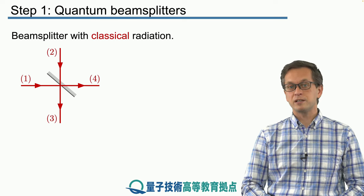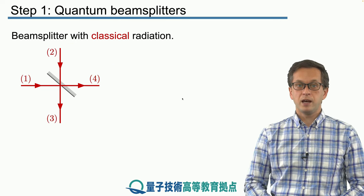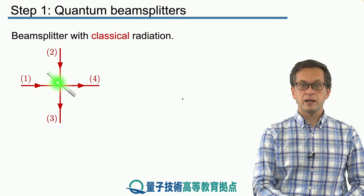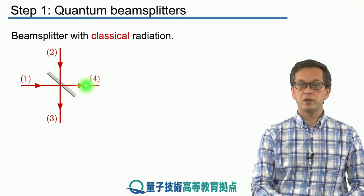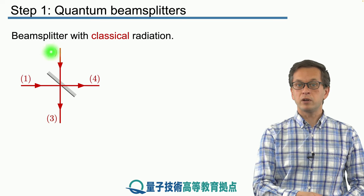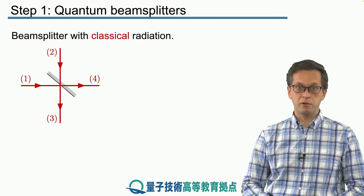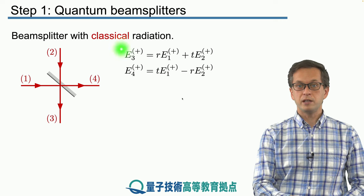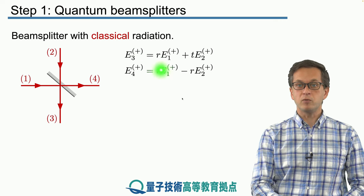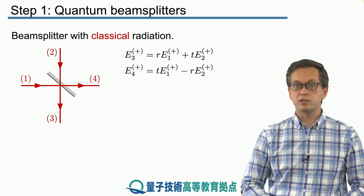A beam splitter is an optical device with two input ports, here denoted by 1 and 2, and two output ports 3 and 4. The light coming in from input 1 has a chance to be reflected at the interface into mode 3 or transmitted into mode 4, and similarly for input mode 2 it has a chance to be reflected and enter mode 4 or transmitted and enter mode 3. Writing this mathematically, E3 is composed of R times E1 plus T times E2, where R and T are the reflection and transmission coefficients.